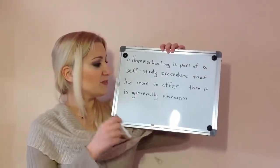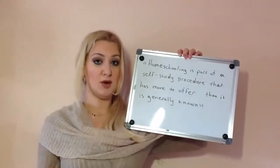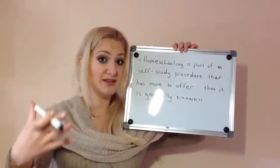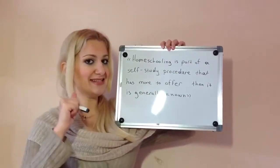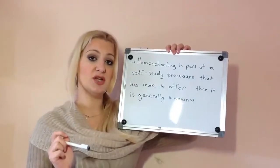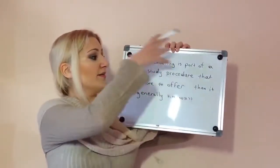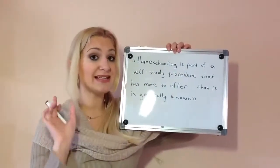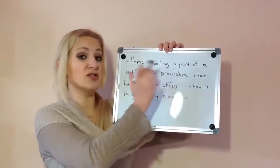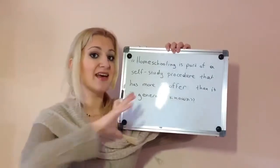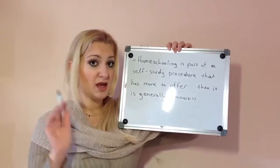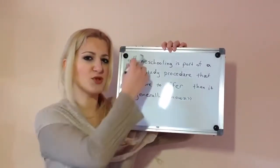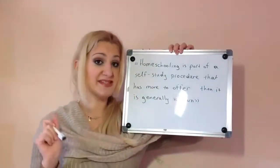Let's read this statement: 'Homeschooling is part of a self-study procedure that has more to offer than it is generally known.' In the text, the idea of homeschooling is analyzed in a paragraph along with its advantages. But it is never actually stated that it is part of a self-study procedure — never clearly stated. It could be part of a self-study procedure, but the paragraph is analyzing and discussing something else. So this is not given.